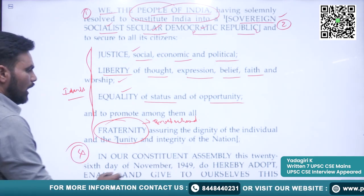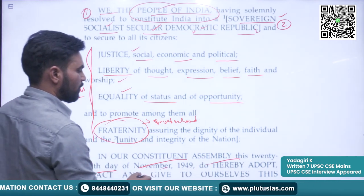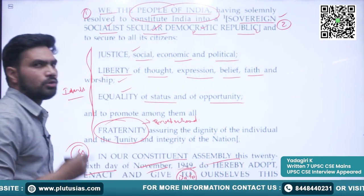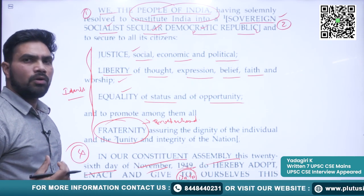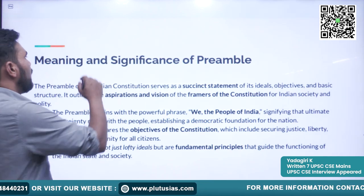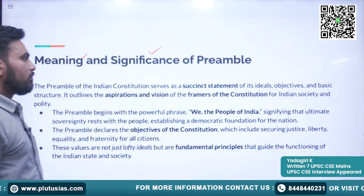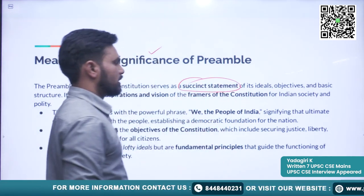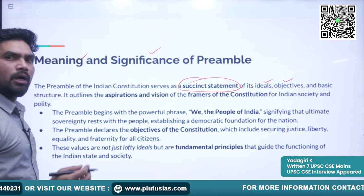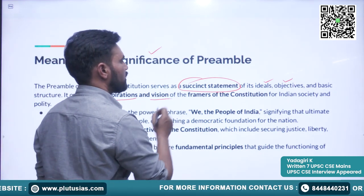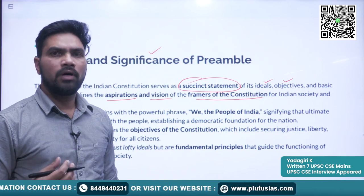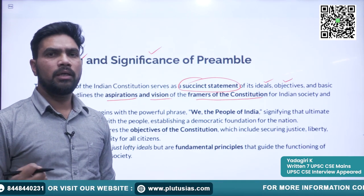The fourth part is 'in our constituent assembly on the 26th day of November 1949,' which shows the date of adoption of the constitution. These are the four things we grasp from the original text of the preamble. The preamble is a succinct statement of the ideals and objectives of the constitution, and it also shows the aspirations and vision of the framers of the constitution.